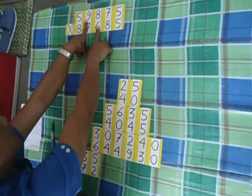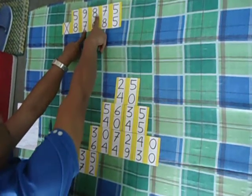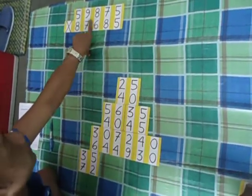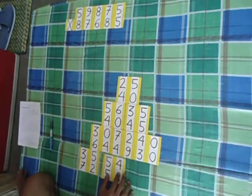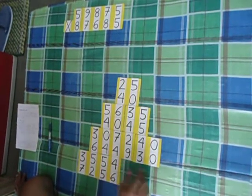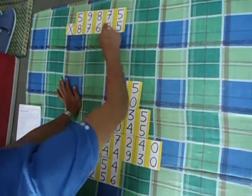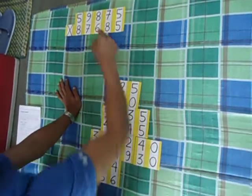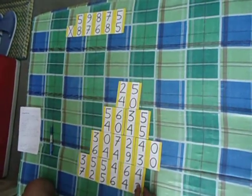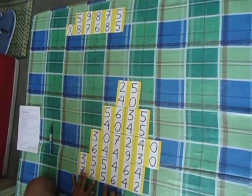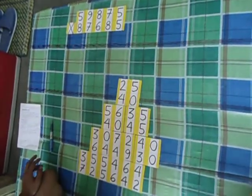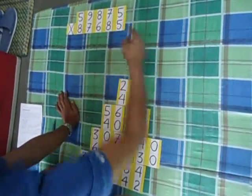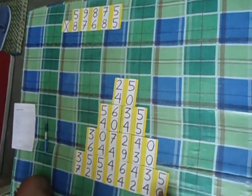We have 9 times 6 gives 54, and 7 times 8 gives 56. So we have 54 and 56. Next, 8 times 8 gives 64, and 6 times 7 gives 42. So we have 64 and 42. Followed by 7 times 5, we have 35.